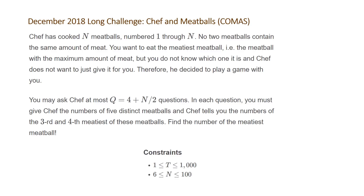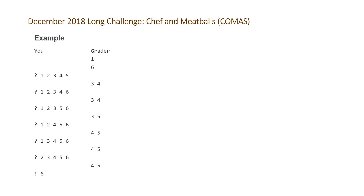So let's take a look at an example. This is the example that CodeChef provided. You can see t at the top is just one for one test case, and this is a pretty simple example where it gives us six meatballs. The way you output your requests is to start with a question mark and then give the indices of five different meatballs. It will return the indices of the two meatballs that are the third and fourth largest. In this example, the index matches the size of the meatball, so six is going to be the biggest meatball. When you give it 1, 2, 3, 4, 5, the grader tells you that index three and four are the third and fourth largest meatballs.